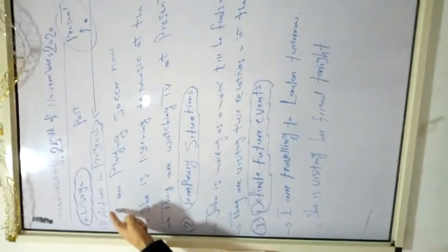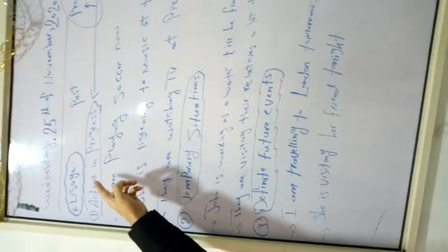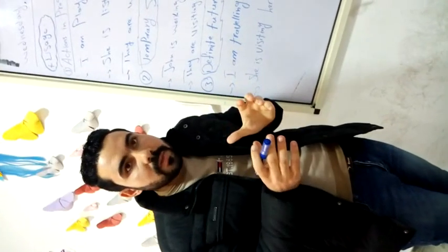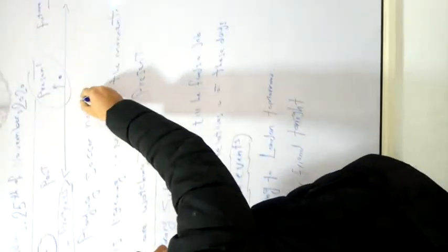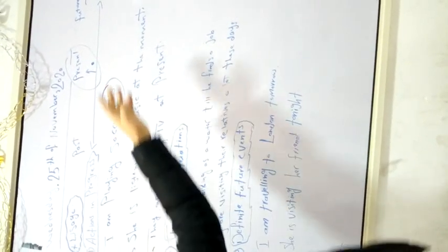This tense is examined through the usage. The first usage is actions in progress. What I mean by actions in progress? Actions in progress means actions which are happening in the moment, actions which are taking some time. They are in continuity. Like what? I am playing soccer now. Do you think this action is happening in the past or the present or the future? All of us think that it is in the present, because we have the keyword now. The keyword now indicates the present continuous tense.